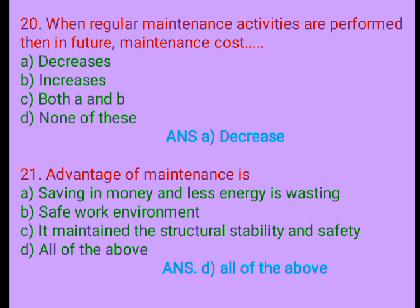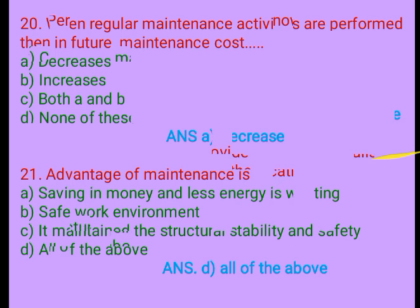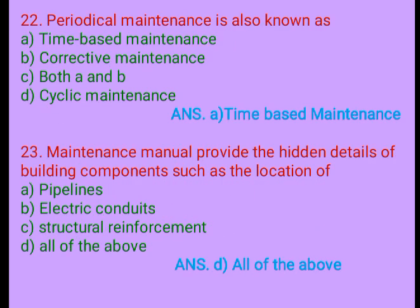Question 21. Advantages of maintenance include: A. Saving in money and less energy wasting, B. Safe work environment, C. It maintains the structural stability and safety, D. All of the above. Answer: D. All of the above. Question 22. Periodical maintenance is also known as: A. Time-based maintenance, B. Curative maintenance, C. Both A and B, D. Cyclic maintenance. Answer: A. Time-based maintenance.